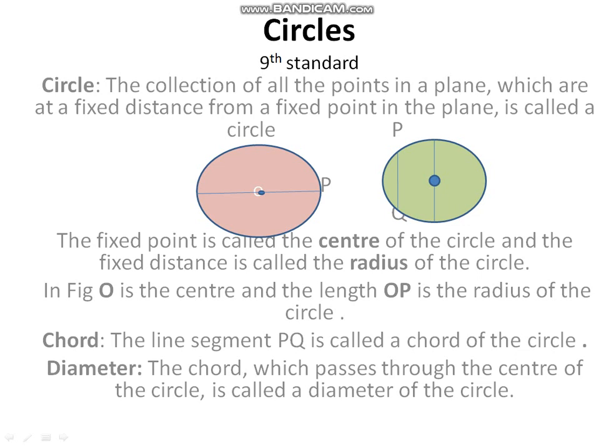Next, chord. A chord is a line segment joining any two points on the circle. In figure 2, PQ is a line segment. PQ can be considered as the chord of the circle — that is, the line joining any two points P and Q.